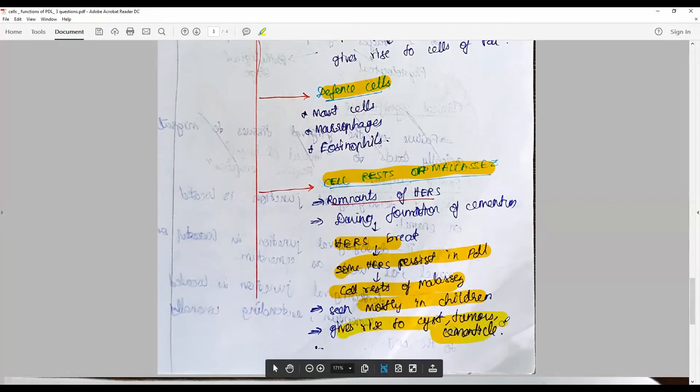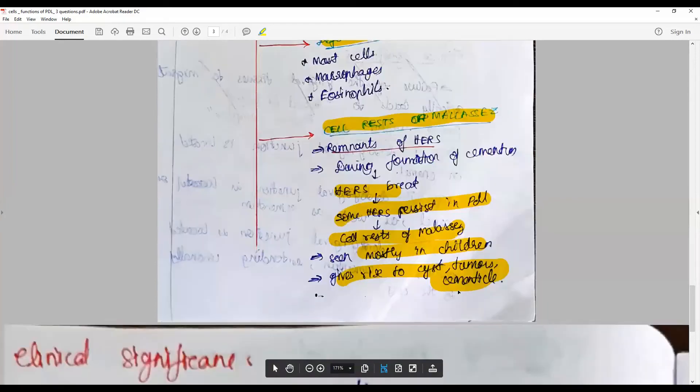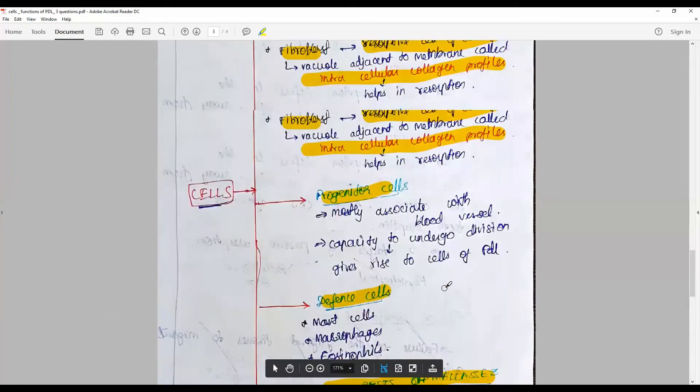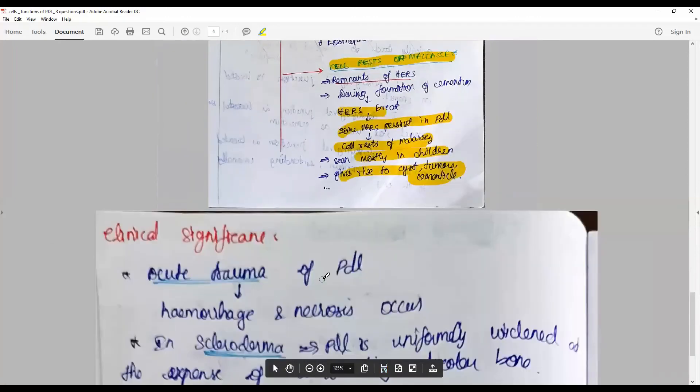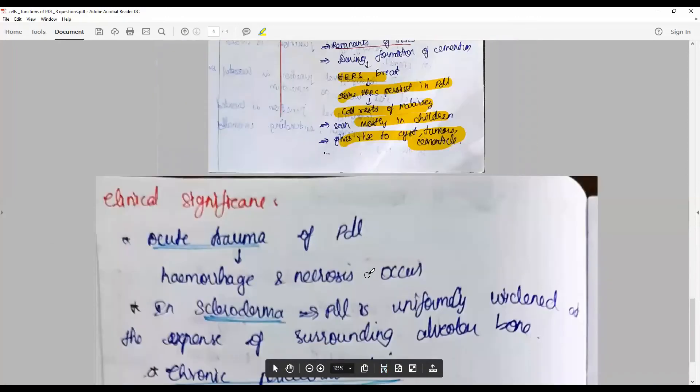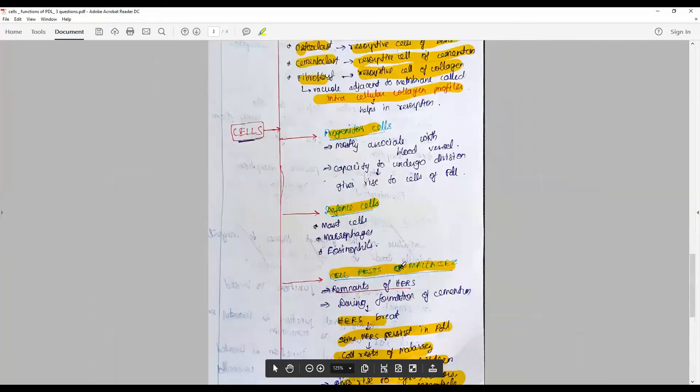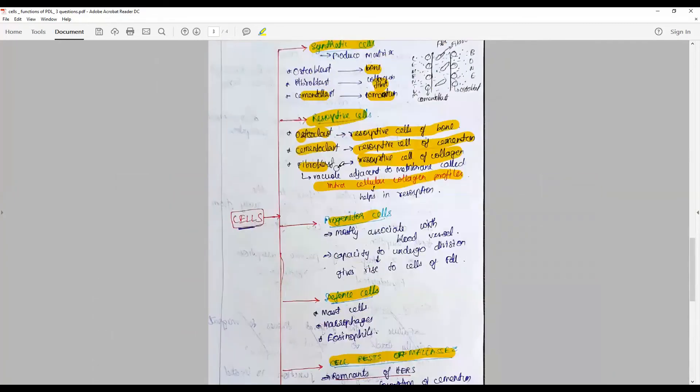Clinical significance: acute trauma to PDL can cause hemorrhage and necrosis. Healing may be stimulated by these synthetic and resorptive cells. The progenitor cells can function to supplement and nourish this area.